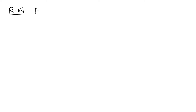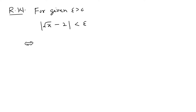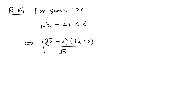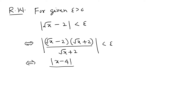For given epsilon positive, what we need to prove is |√x − 2| < epsilon. This is equivalent to multiplying by the conjugate top and bottom, which is what we normally do for square root functions. After multiplying by the conjugate, the top simplifies to |x − 4|, and since the bottom is positive we can work with it directly. So we get |x − 4| divided by (√x + 2) less than epsilon.